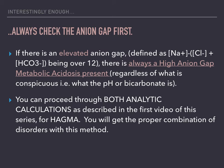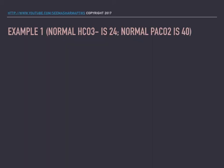Here's an example. Remember, for the purpose of this series, the normal value for bicarbonate is 24, and the normal value for the pressure of carbon dioxide is 40. The first thing you do is calculate the anion gap.